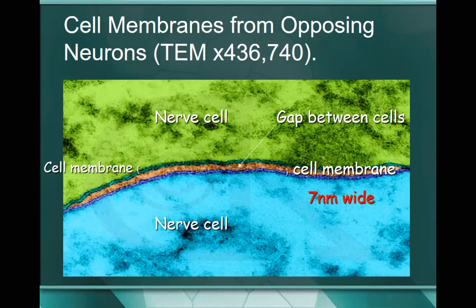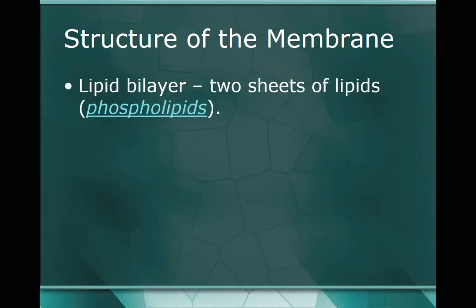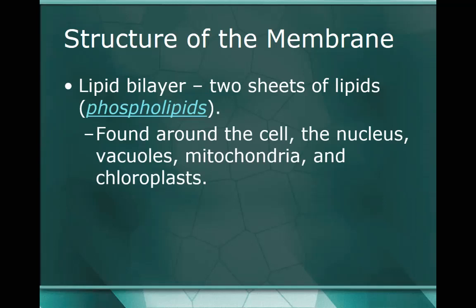Let's take a closer look at the actual structure of the membrane. As I just mentioned, it's a lipid bilayer - two sheets of lipids. The type of lipid, if you remember from our lipid notes, is what we call phospholipids. We find these plasma membranes located around the outside of the cell - the cell membrane - and it's the only plasma membrane all cells have. But we also find them around the nucleus in the nuclear membrane or nuclear envelope; it makes up the outer shell of the vacuole, the infolding parts of the mitochondria, and the thylakoids for the chloroplasts. All of these are membrane-bound organelles - the outer layer is a membrane like we're talking about today.